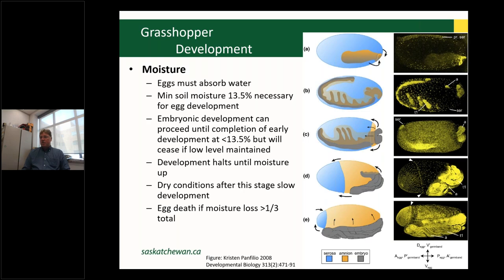Moisture is very important — eggs must absorb water. A minimum soil moisture of 13.5% is necessary for egg and embryonic development. Development can only proceed to completion of early development at 13.5%, and will cease if dry conditions occur, allowing them to remain in arrested development until conditions improve — they can stay in this condition for additional years. Egg death occurs if moisture drops below one-third. Very dry conditions can kill grasshoppers, but as a rule, dry conditions benefit their populations.